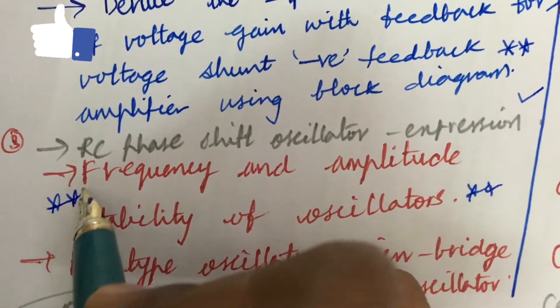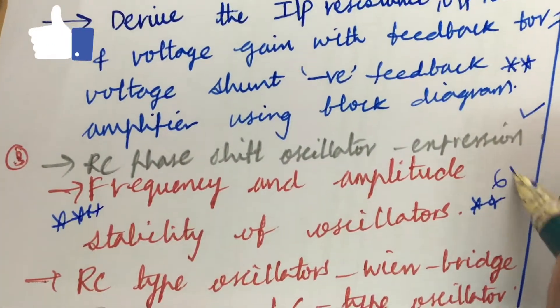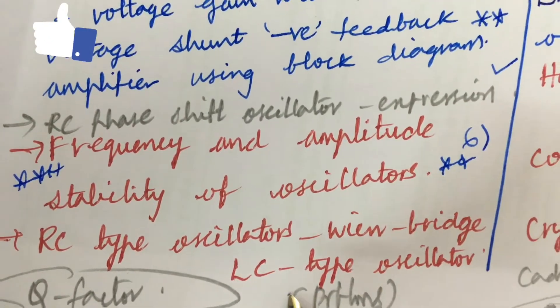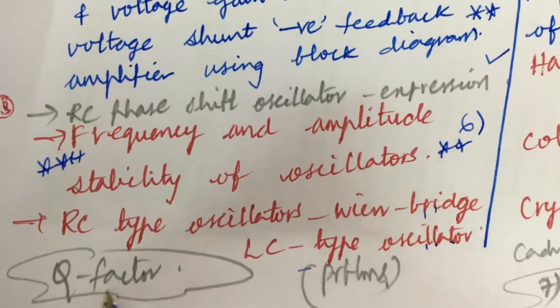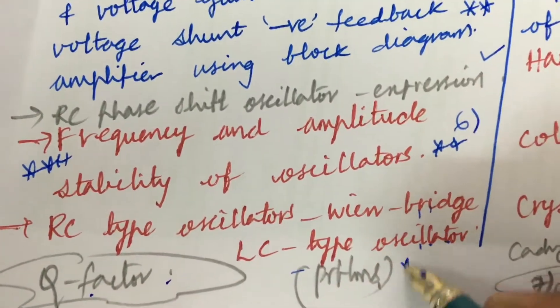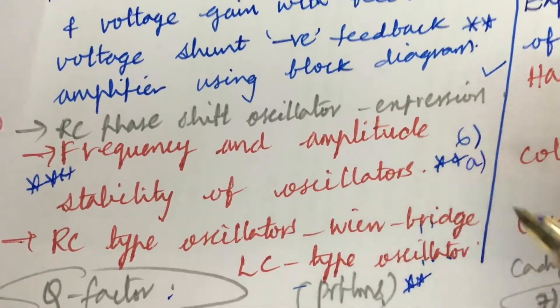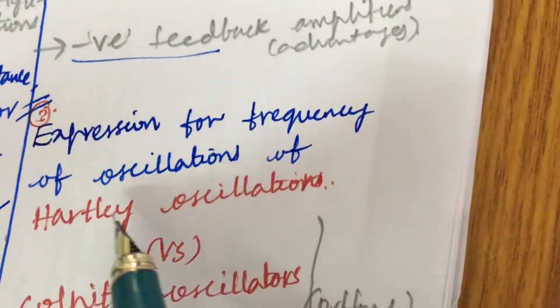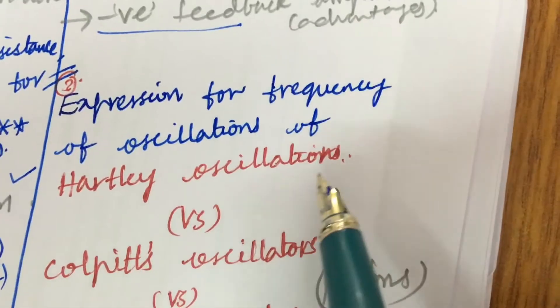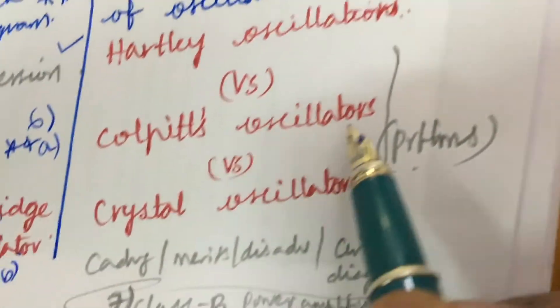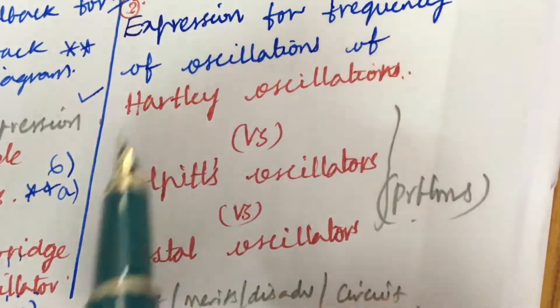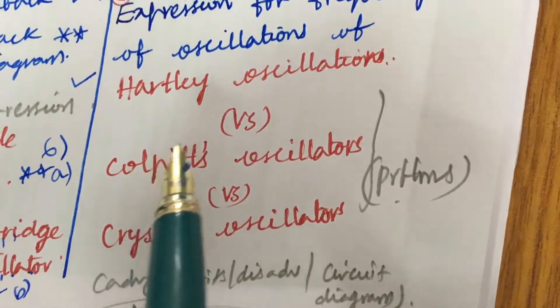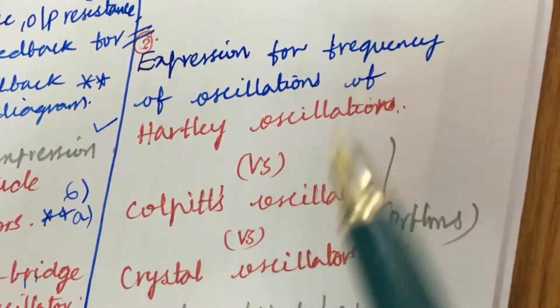RC type oscillators, the Wien bridge as well as LC type oscillators and their differences, and related to the Q factor and the problems may be also one of the very important - this may be the b equation in the sixth equation. Expression for frequency of oscillation of Hartley oscillator, Colpitts oscillator, and the crystal oscillator as well as their working principles, block diagram as well as the advantages, merits or disadvantages, and the differences.